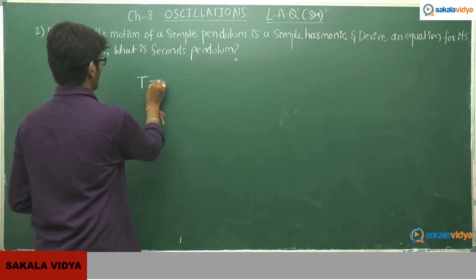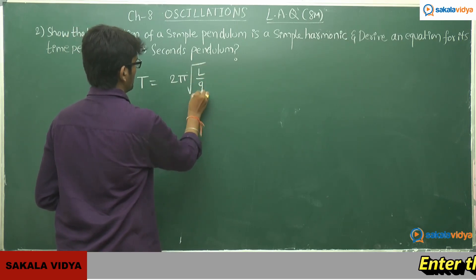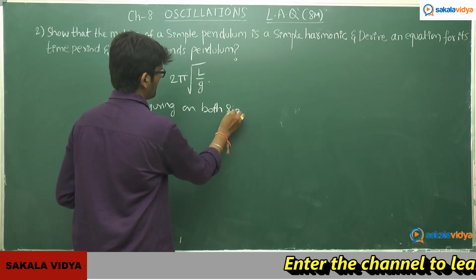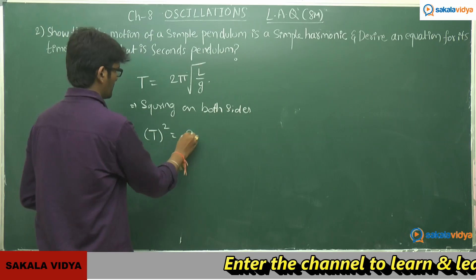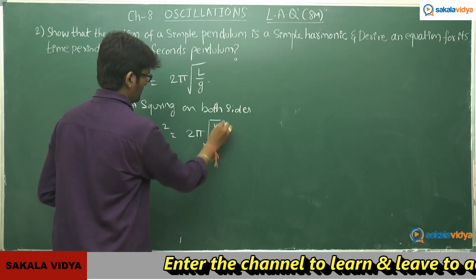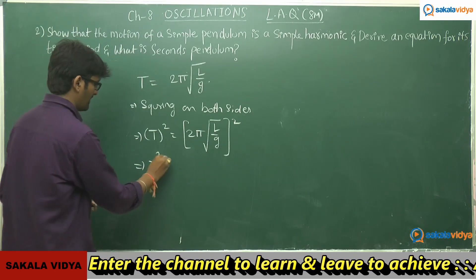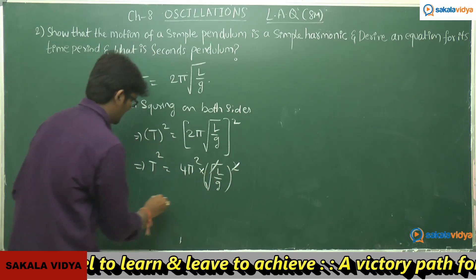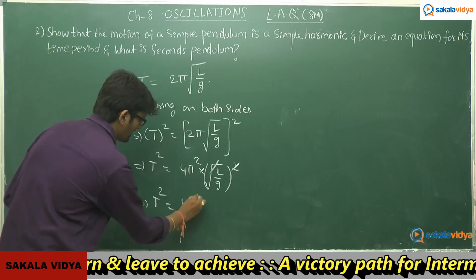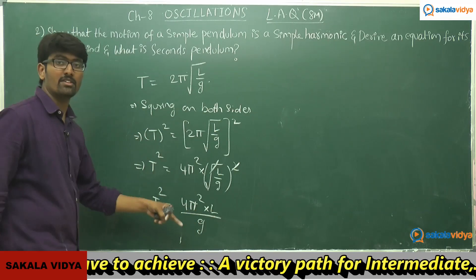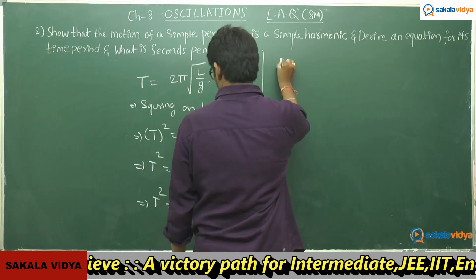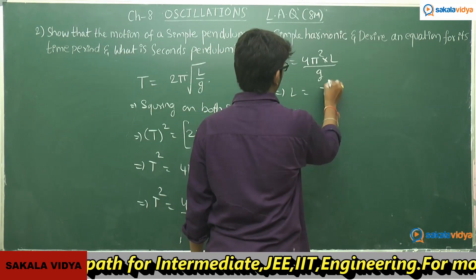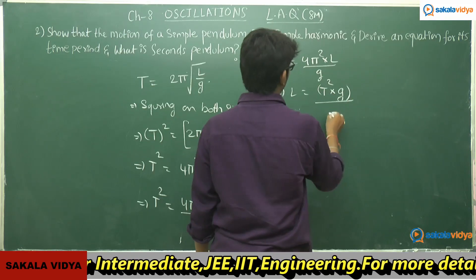Using the time period formula T = 2π√(L/g) and squaring both sides: T² = 4π²(L/g). Solving for L: L = T²g / (4π²). Substituting T = 2 seconds and g = 9.81 m/s²: L = (4 × 9.81) / (4 × π²). Since 4 cancels with 4 and 9.81 with 9.81, the length L = 1 meter, or simply 100 centimeters.